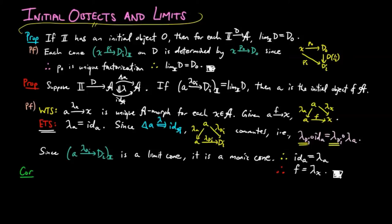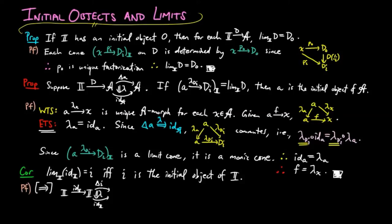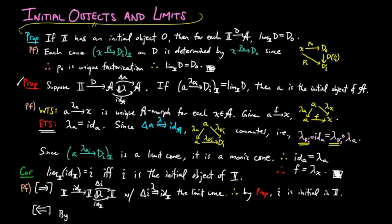Then as a corollary, we have the limit of the identity functor is equal to the object little i, if and only if little i is the initial object of the category i. For the forward direction, we have the limit cone lambda on the identity, giving us little i as the initial object by the above proposition in red. And the reverse direction follows from the blue proposition above, which completes the proof.